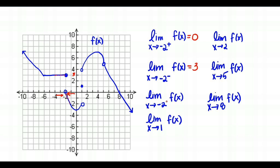The third question asks us to find the limit as X approaches negative 2 with no plus or minus, meaning from both sides. From the right side the limit was 0, and from the left side it was 3. Since the limit from the right does not match the limit from the left, we can say that this limit does not exist.